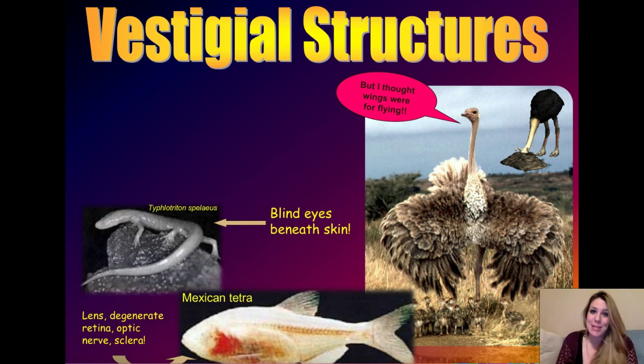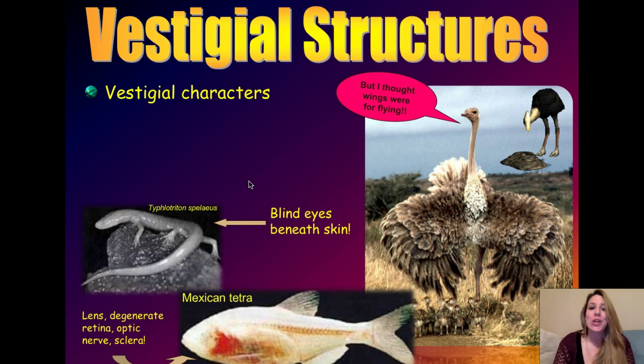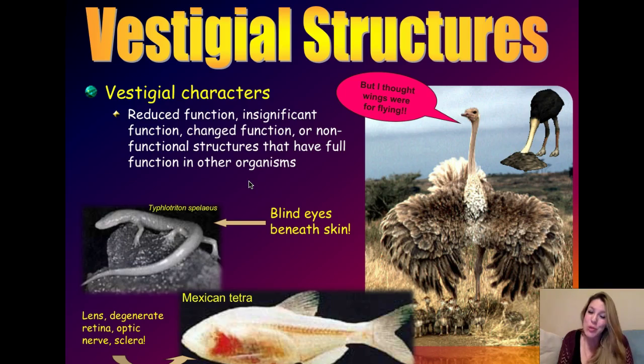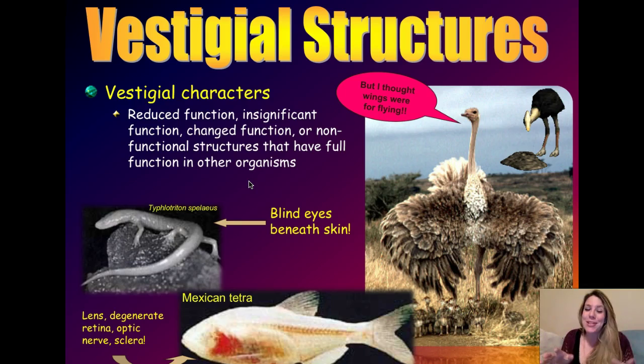We are now talking about vestigial and atavistic structures as pieces of evidence for macroevolution. A vestigial structure or vestigial character is one in which there is a loss of a structure, or it's been reduced or had an altered function from what it was in an ancestral species, and in fact it may still be present in a cousin species.